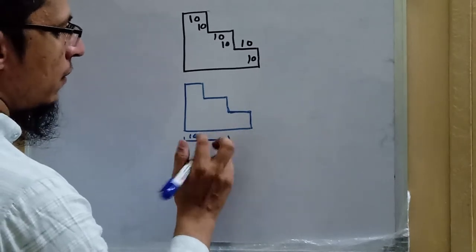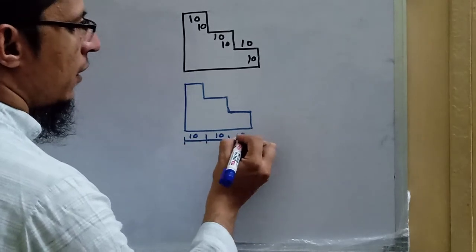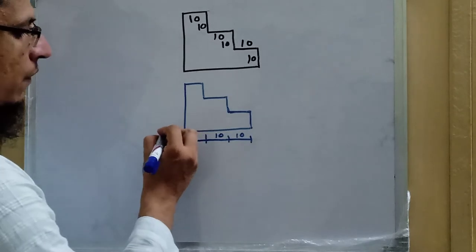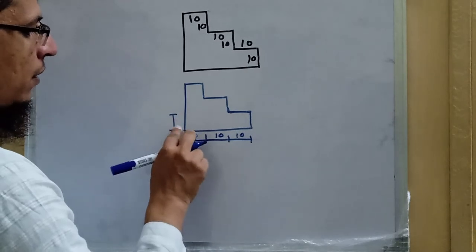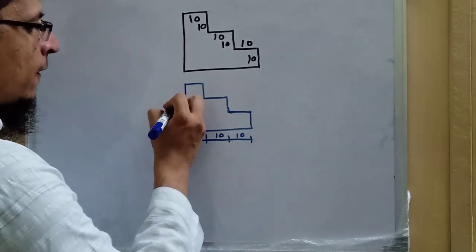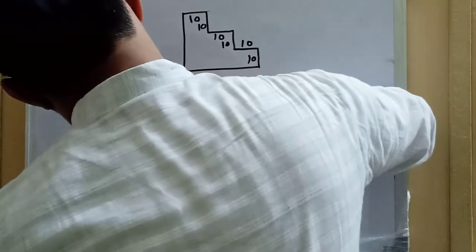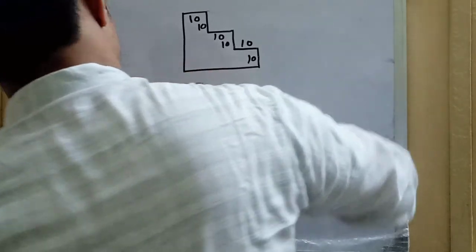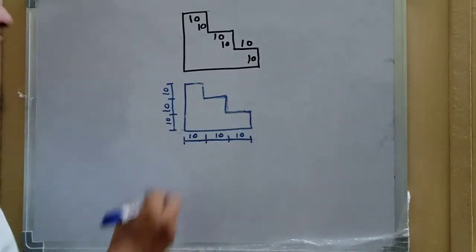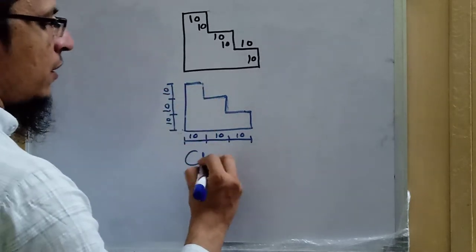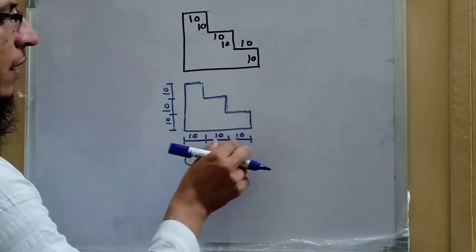Continuing in the horizontal direction: this is 10, and this is also 10. Similarly in the vertical direction we move like a chain: this is 10, then again 10, and this one is also 10 — so we write 10, 10, 10. In this way we do chain dimensioning, where dimensions are attached to each other just like a chain.